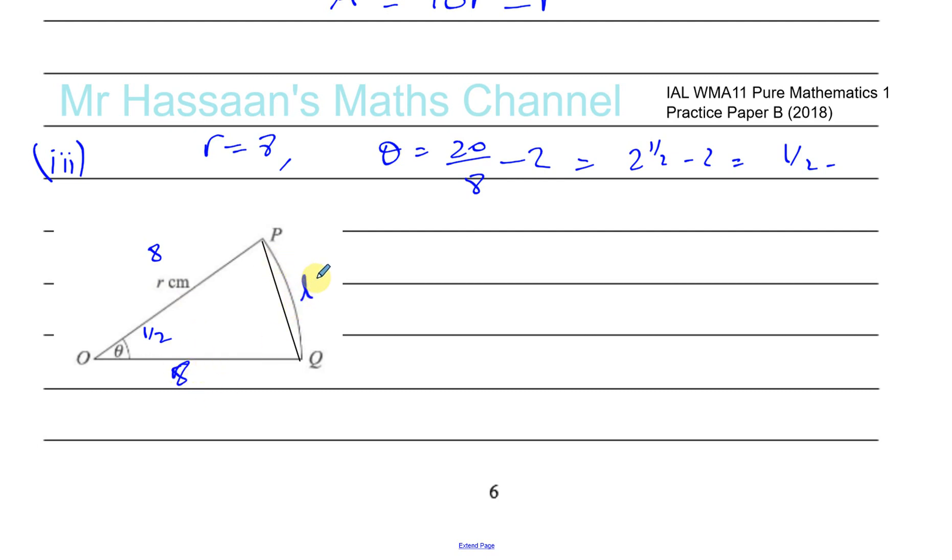So we need to find the length of this line PQ, not the length of the arc. So this is part of this triangle OPQ. And in a triangle, if you know two sides and the angle between the two sides, you can use the cosine rule. You could also, as it's isosceles, you could split this in half and use trigonometry. But it's much easier for us, I think, to use the cosine rule here.